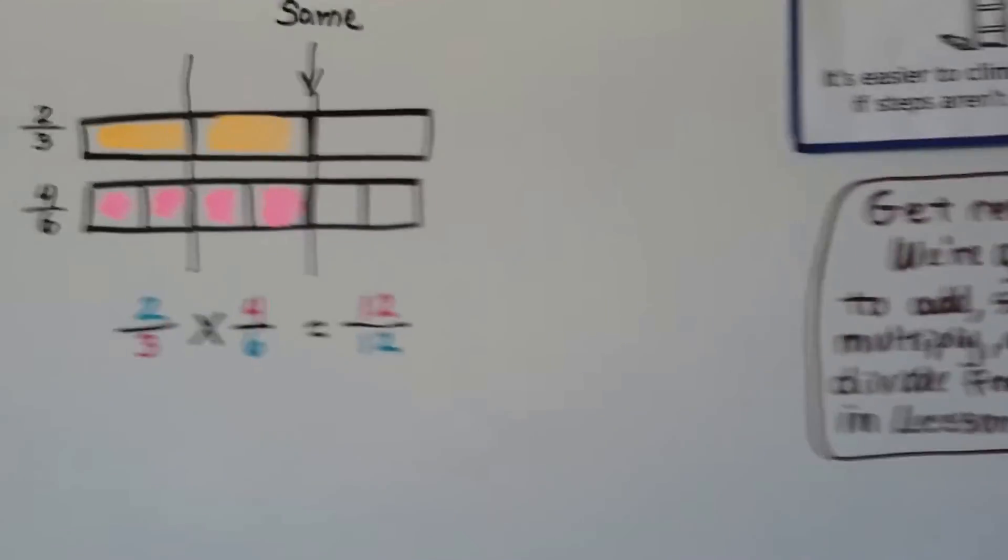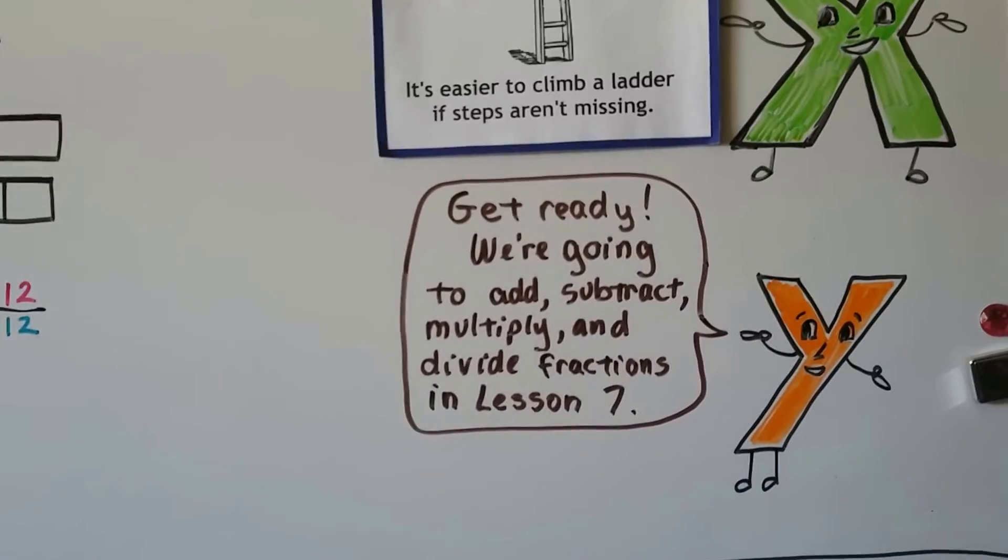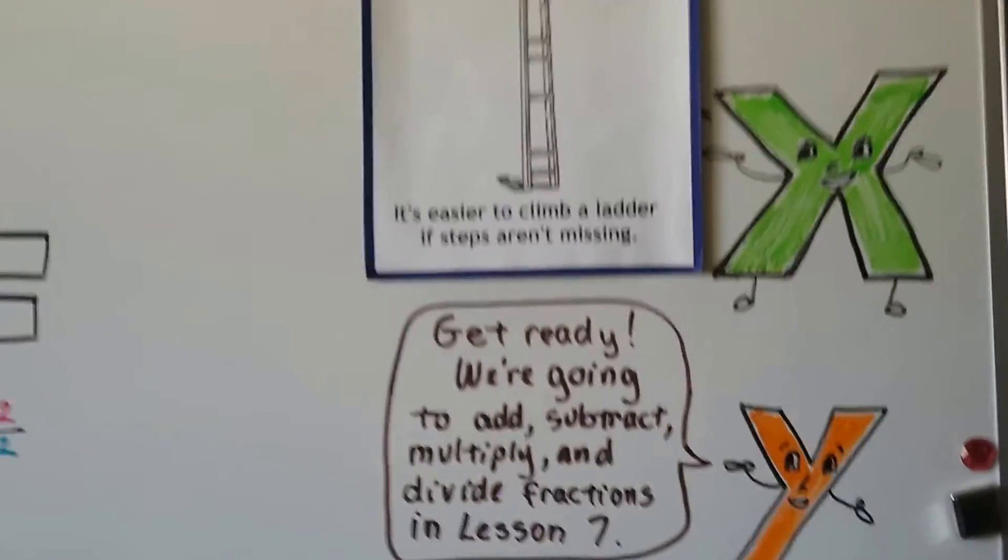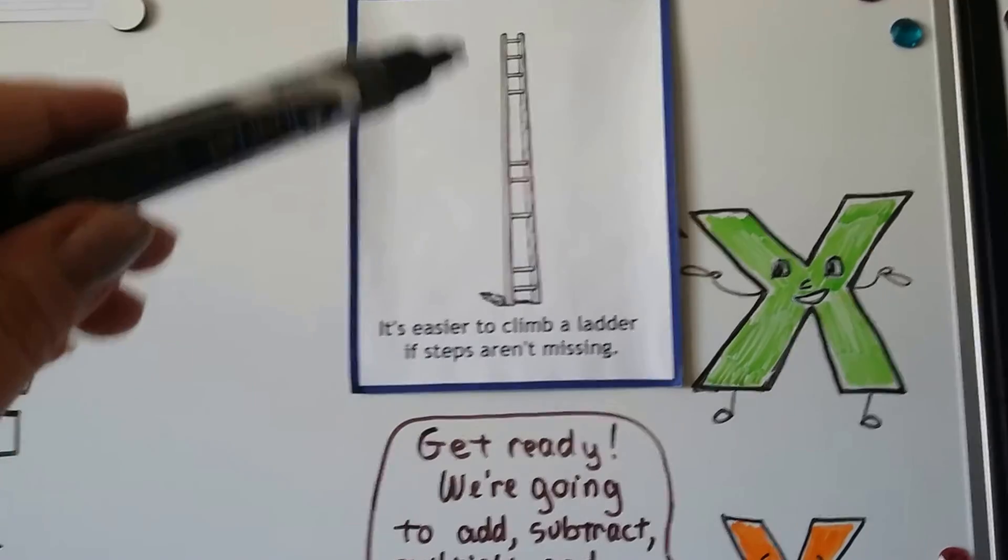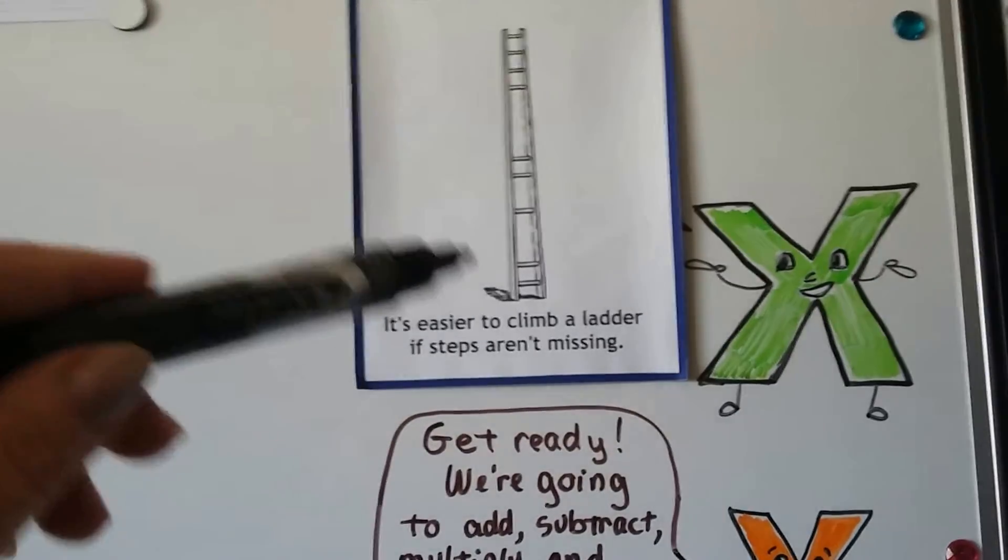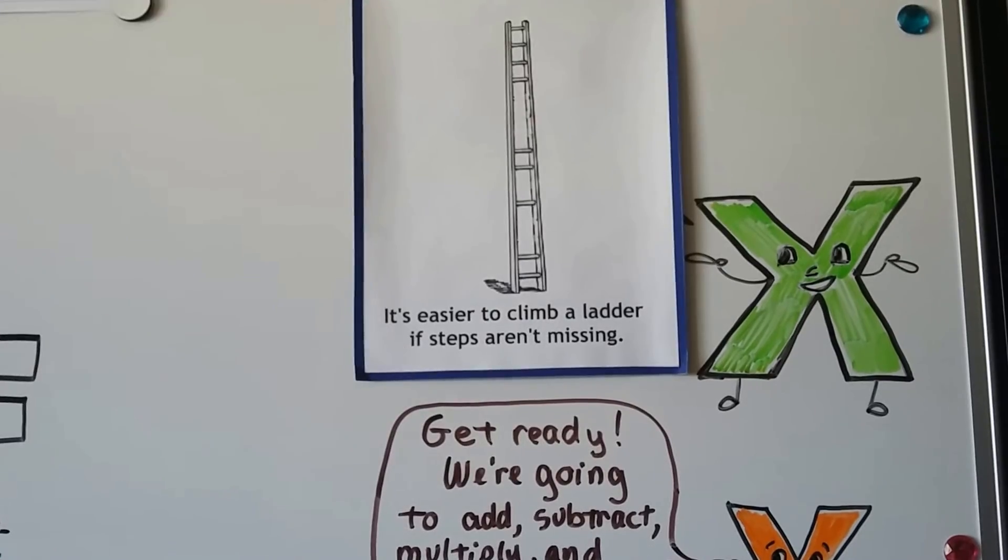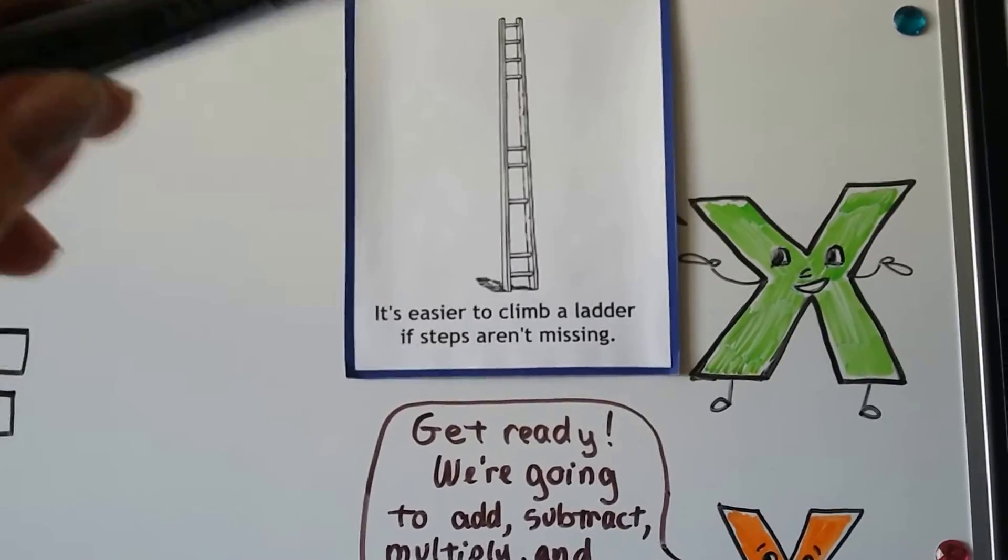We are slowly getting ready because we're going to be adding and subtracting and multiplying and dividing fractions in Lesson 7. I don't want you to miss any steps. You can still climb the ladder, but it's going to be really hard. People that have all the steps are going to go up very smoothly and easily, and you're going to be pulling and reaching and struggling to get up.